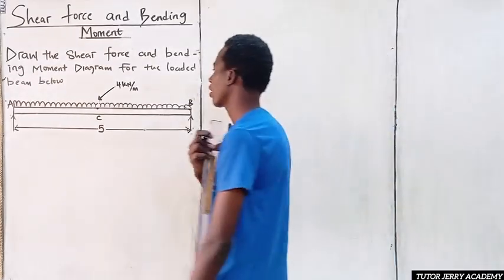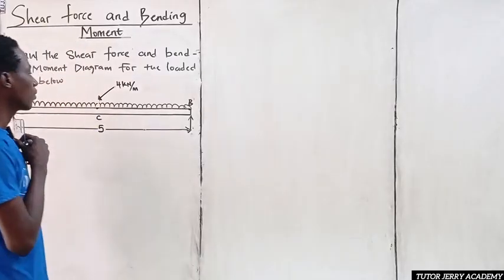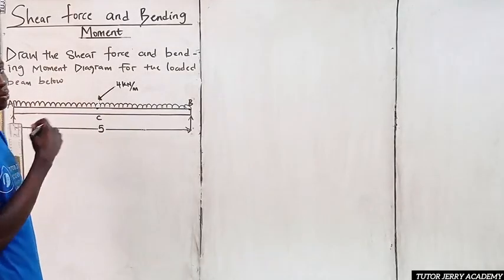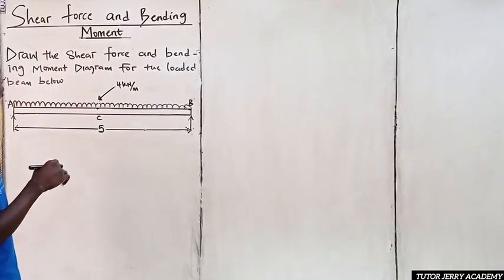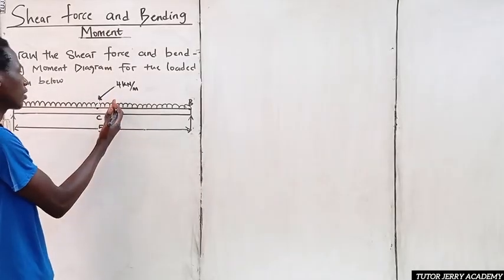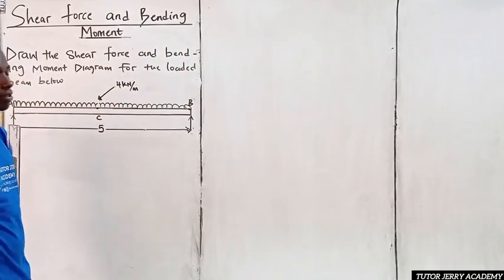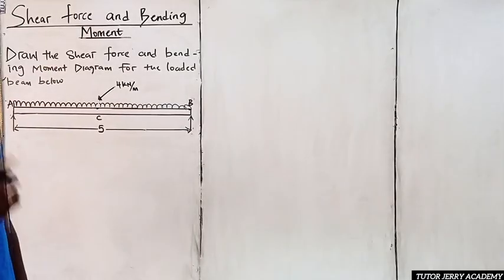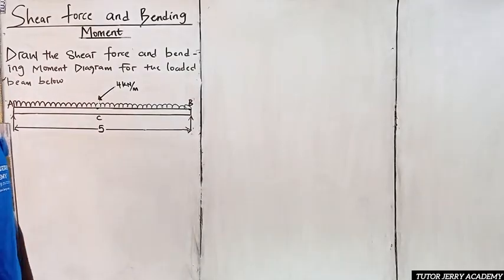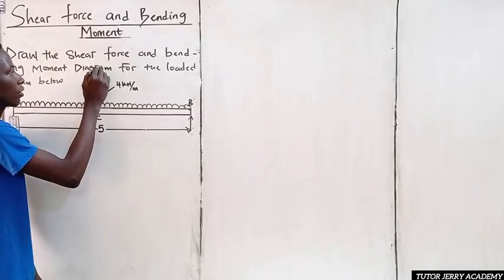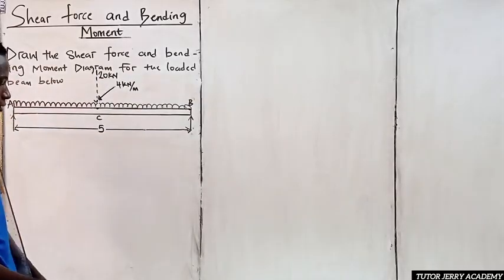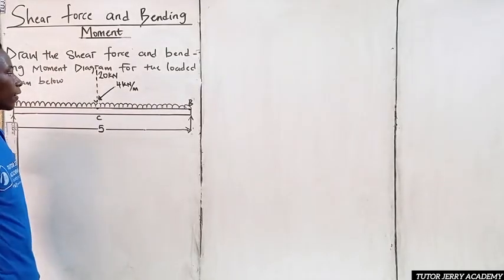To begin, we are going to be converting this uniform distributed load over the span of the beam to a point load. To do that, we multiply the total distance of the load by the load itself. So we have four times five, which gives us 20 kilonewtons. Converting the load, it will act at the center of the beam — so this will be 20 kilonewtons, no longer a uniform distributed load.